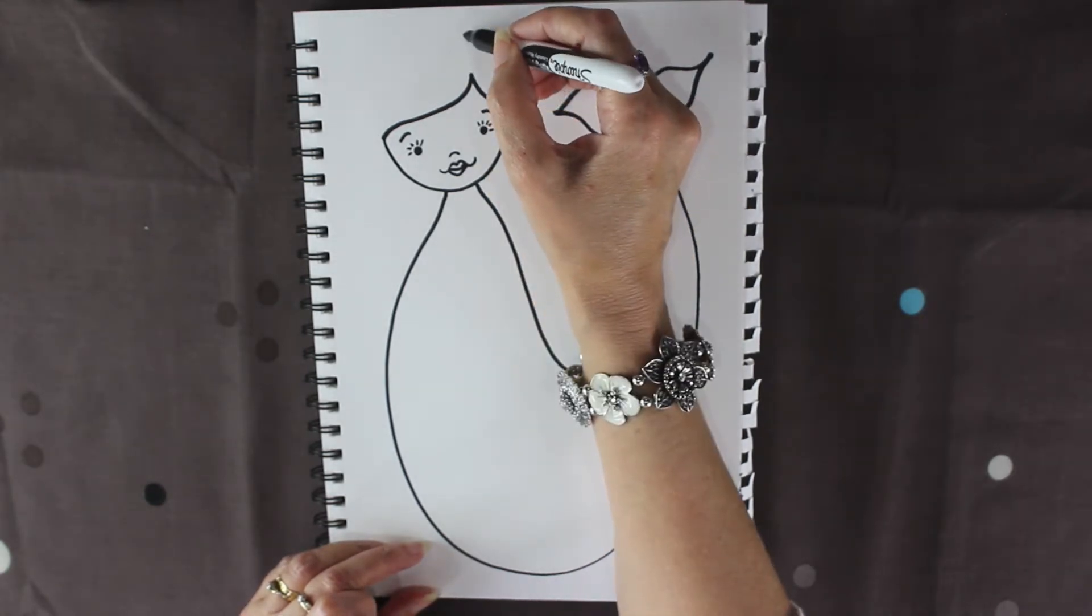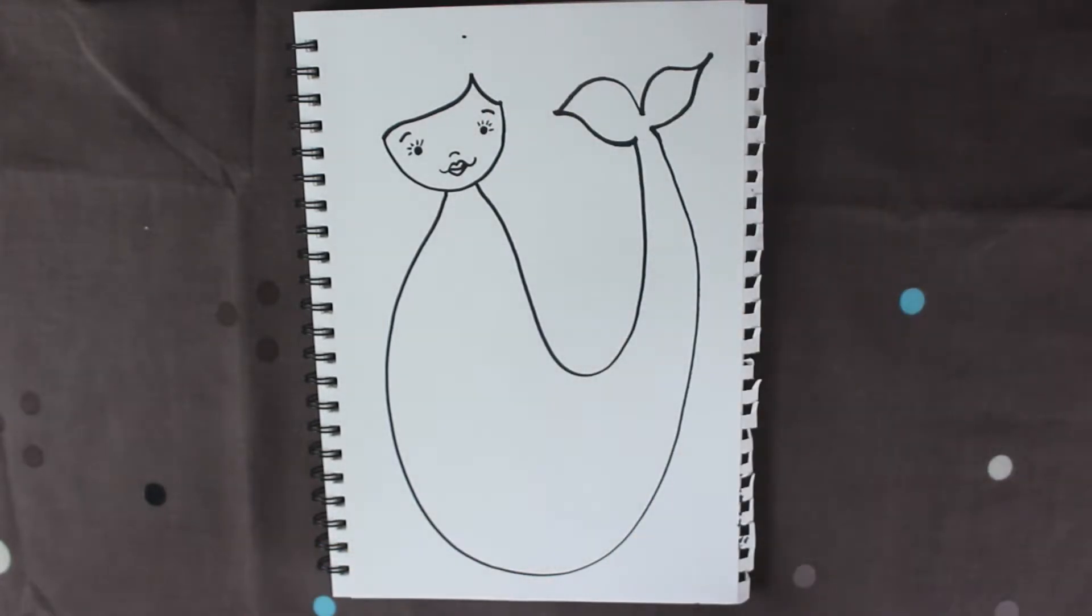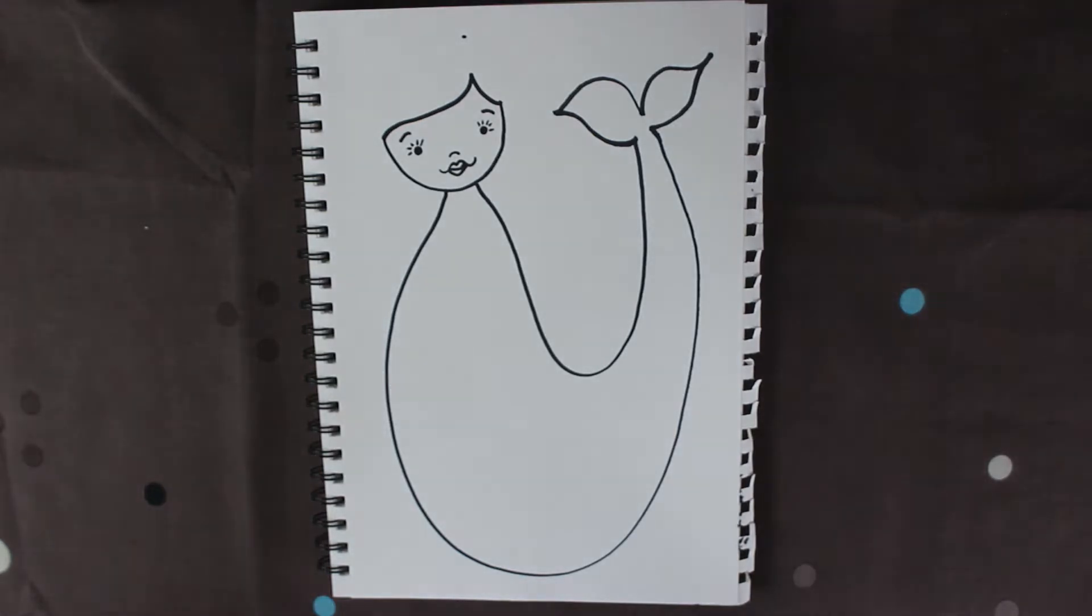Now above this, what I'm going to do is put another dot around about there, and that's where I'm going to start the top of her hair to come over. Now I'm going to leave her hair just for a moment because I want to put some arms in.